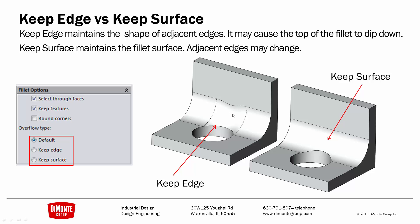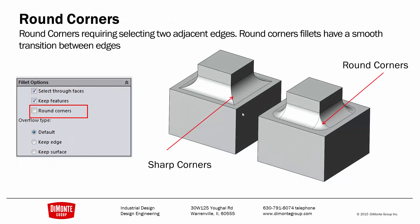If the tool isn't giving the correct result, you may need to try Keep Edge or Keep Surface. Another option of the Fillet tool is Round Corners. With Round Corners turned on, it automatically rounds that corner off and transitions it to the sharp edge, versus simply picking those four edges without it.